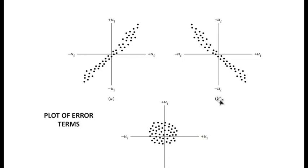In graph C, there is no negative or positive correlation. As you can see, the correlation here is zero, which is a desired expectation in a linear regression model.